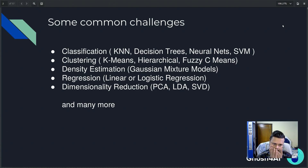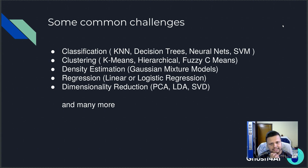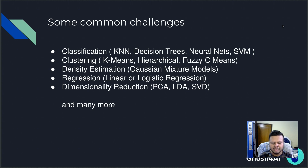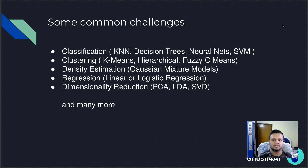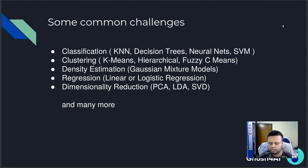In machine learning we deal with various kinds of challenges. The first one is called classification. In classification, our job is to classify or categorize the data samples we have into one of a predefined set of classes. For example, we might develop a system which automatically recognizes digits from postal cards — categorizing pictures of digits into one of 10 digit classes. That's a typical classification example. Another task is clustering, where we may not always know which classes the samples belong to beforehand, but based on their features we can group similar samples together.